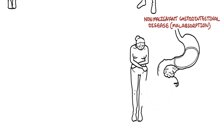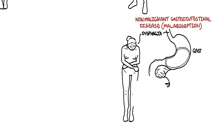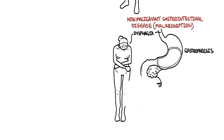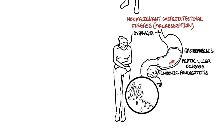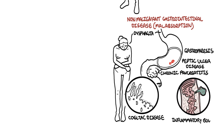Non-malignant causes of the gastrointestinal tract typically include those that cause malabsorption, but also dysphagia (difficulty swallowing), gastroparesis (slowing of gastric emptying), peptic ulcer disease, chronic pancreatitis, and celiac disease — an autoimmune attack on the small intestine on exposure to gluten, which damages the microvilli and causes poor digestion and absorption of nutrients. There is also inflammatory bowel disease such as Crohn's disease, a transmural inflammatory process, or ulcerative colitis, a superficial inflammation of the bowel, both leading to reduced absorption of nutrients.